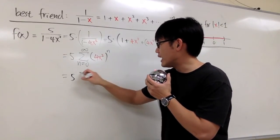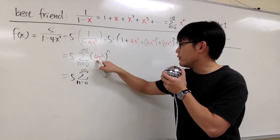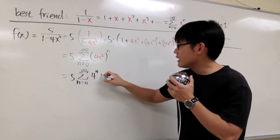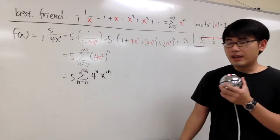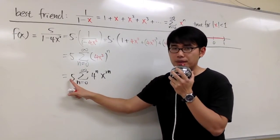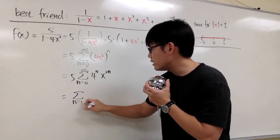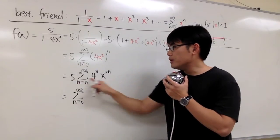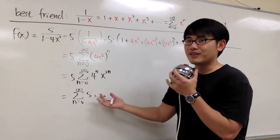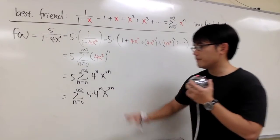Working out the exponent: the 5 is still in the front, and we have sigma from n equals 0 to infinity. Inside, we have 4 to the nth power times x to the second power raised to the nth power, which gives us x to the 2n power. Optionally, you can move the 5 inside the sigma to write it as sigma from n=0 to infinity of 5 times 4^n times x^(2n).